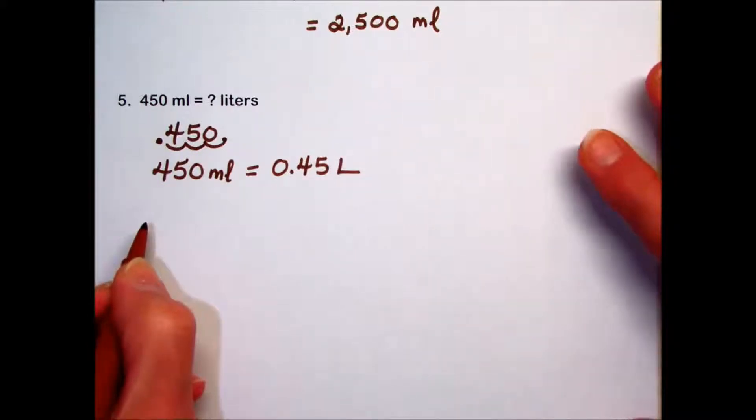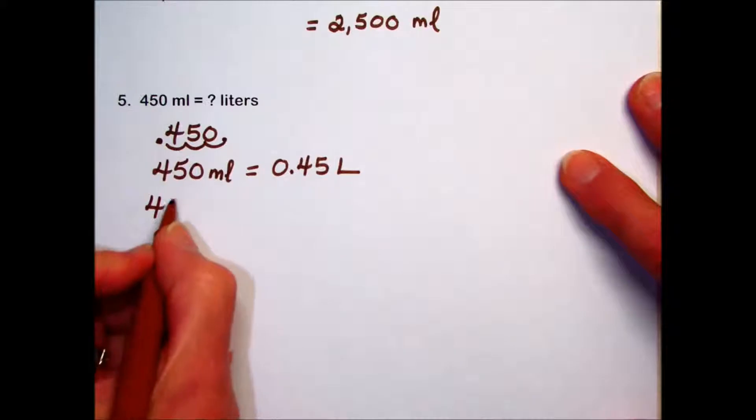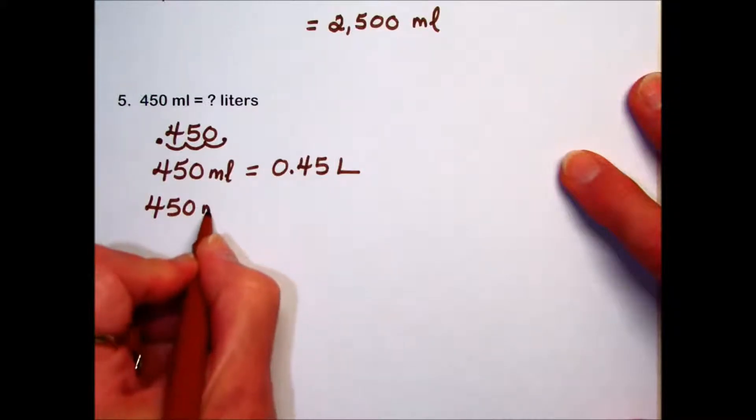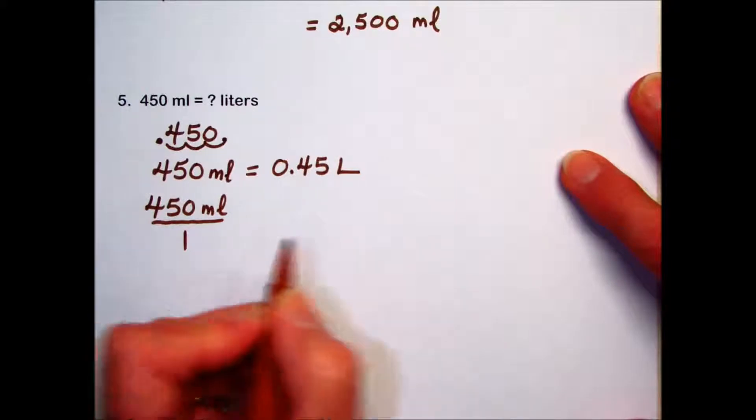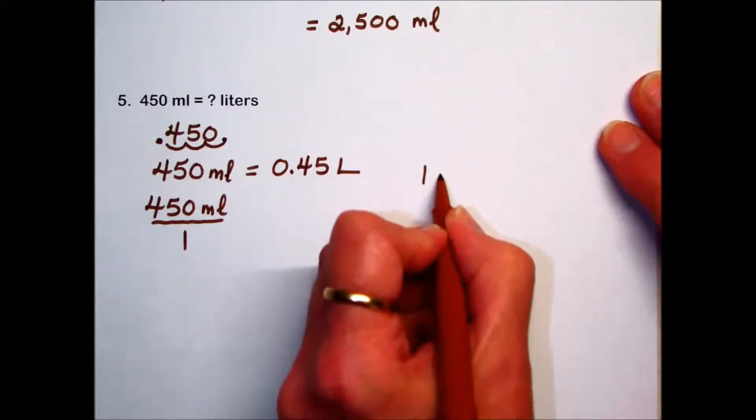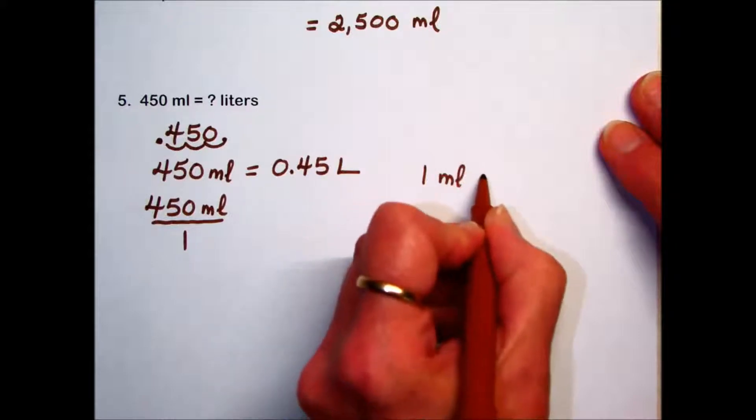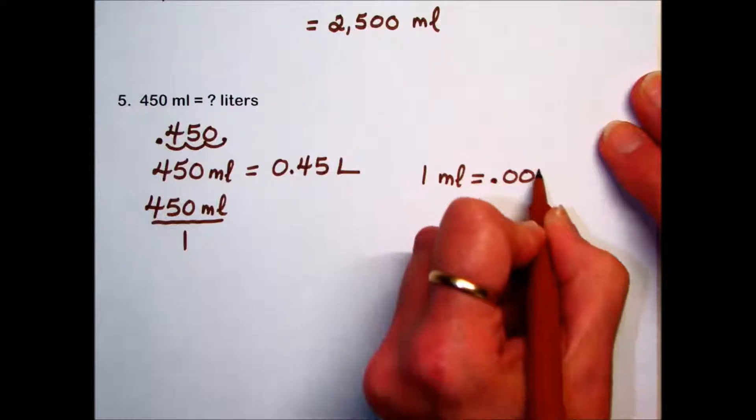If we use the conversion factor method, we start with the given value expressed as a fraction over 1. Using the same conversion factor that we just had in problem number 2, 1 milliliter is equivalent to 0.001 liter.